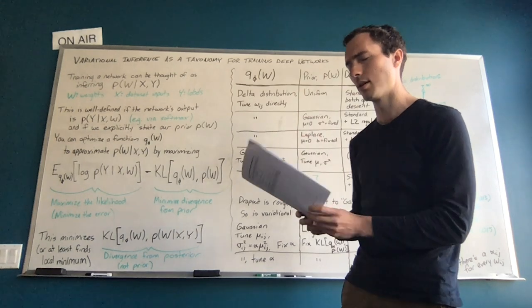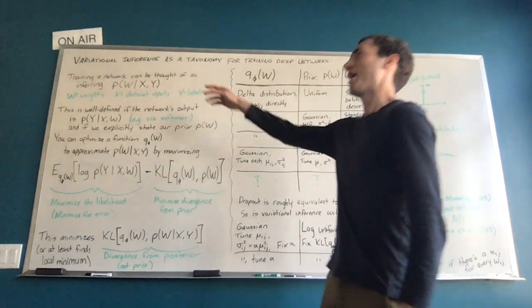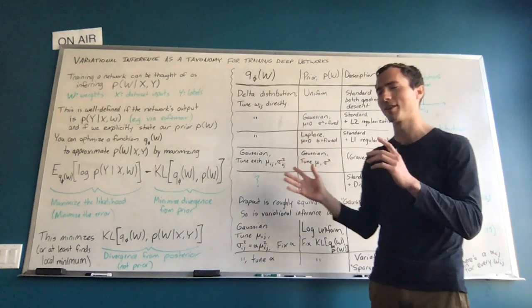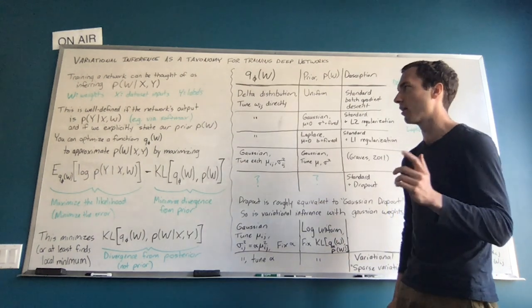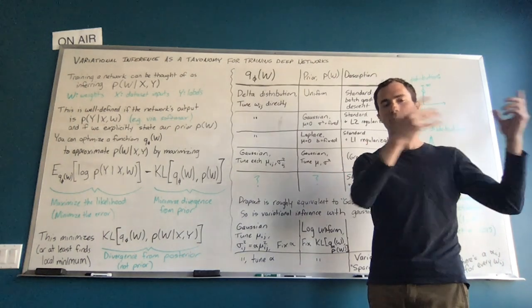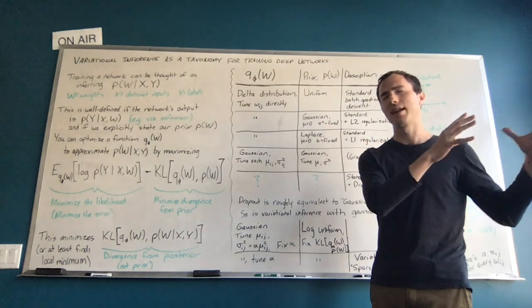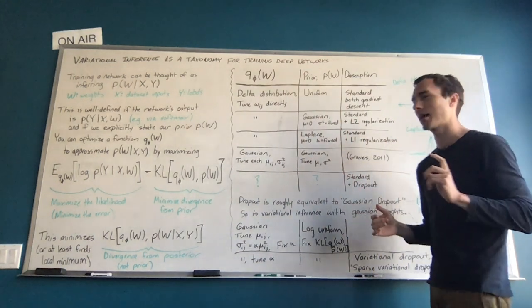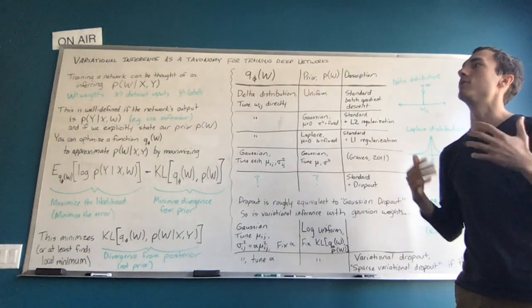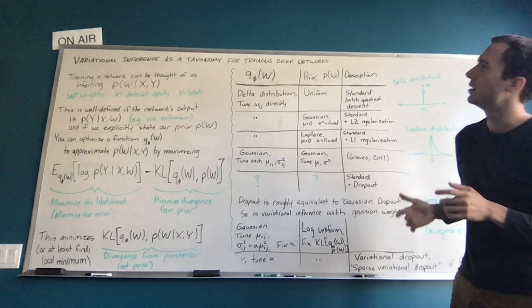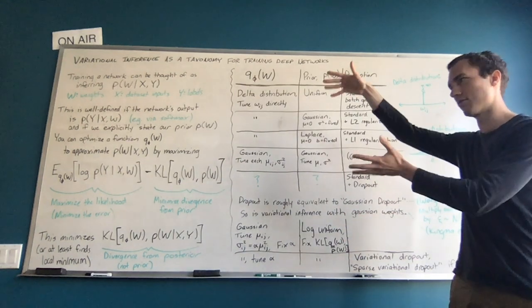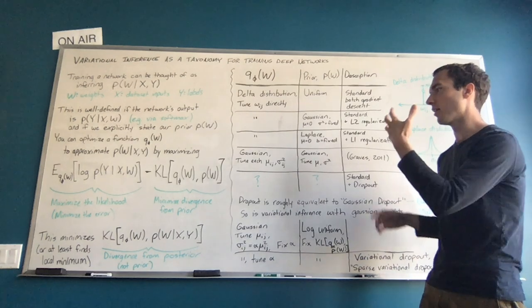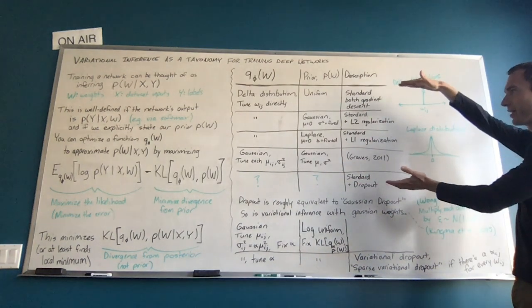I titled this 'Variational Inference as a Taxonomy for Training Deep Networks.' I don't use the word taxonomy very often, but it's useful here. An example often used is the periodic table as a taxonomy for elements — its discovery allowed us to arrange everything in a way where we could start looking for gaps. It gave us a way to organize everything, and that's what a taxonomy does: it gives you a way of mentally arranging things you already know about.